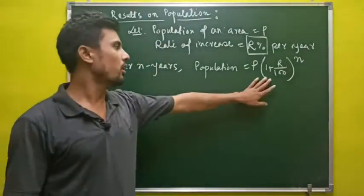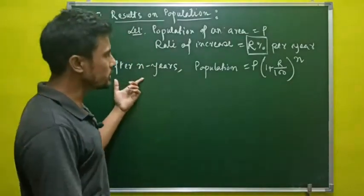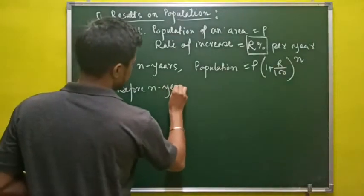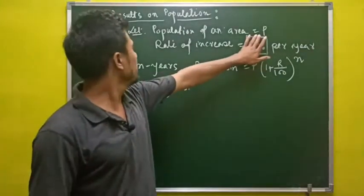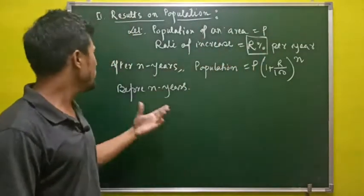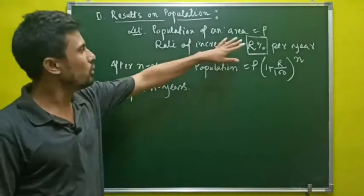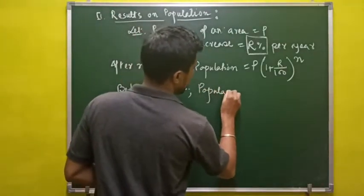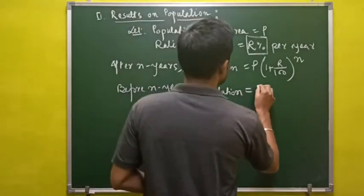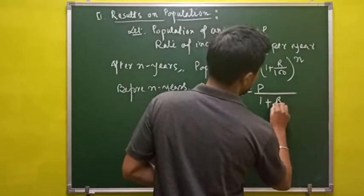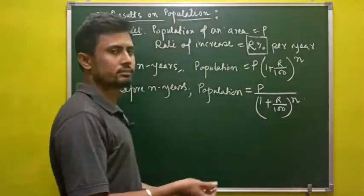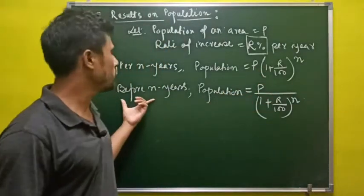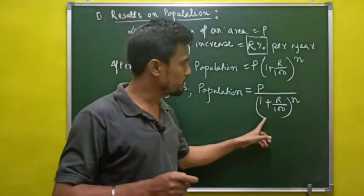So that is the population after N years. Now, if the present population is P, what was the population N years ago? The population N years ago is given by P divided by (1 + R/100)^N. Here you multiply to go forward and divide to go backward in time.